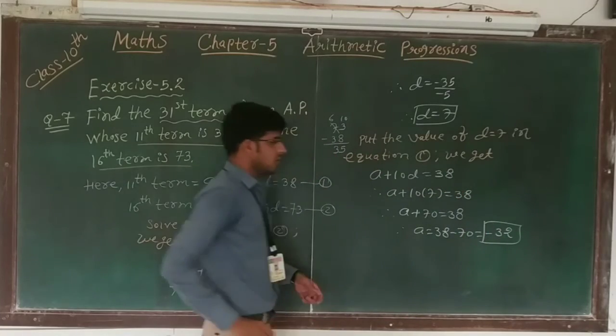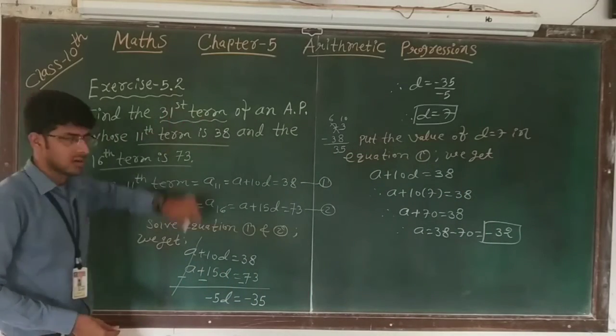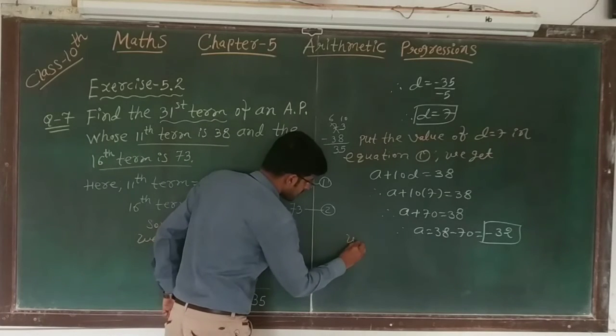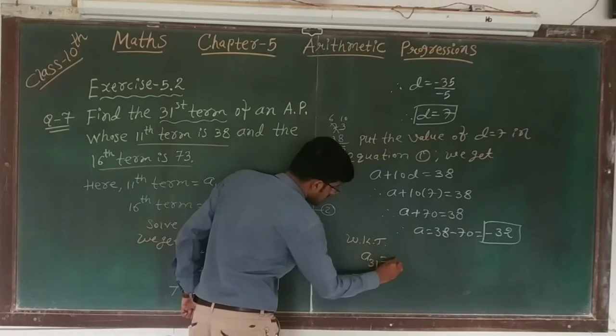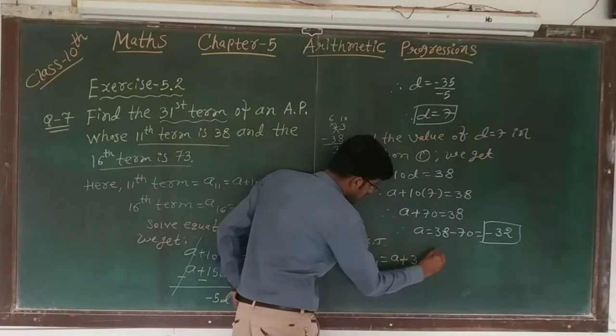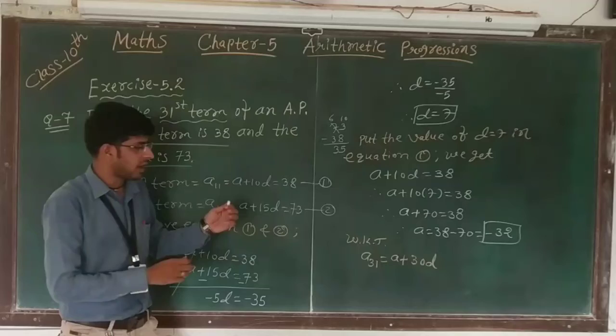Now we have to apply the formula of 31st term, so we know that a31 is equal to a plus 30d. Now we have to put the value of a and d in this formula.